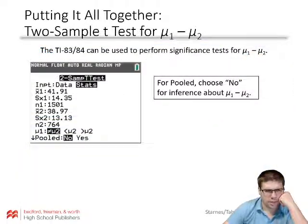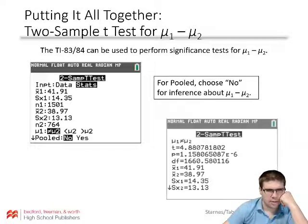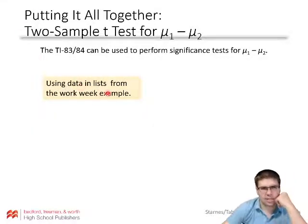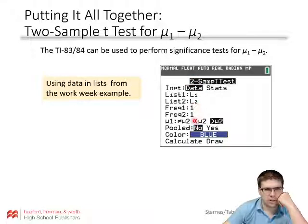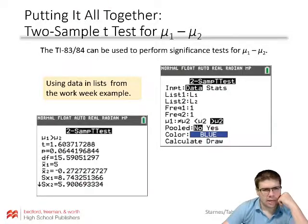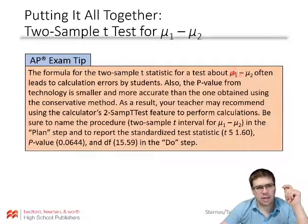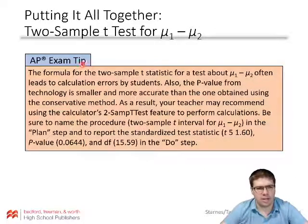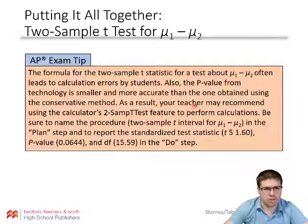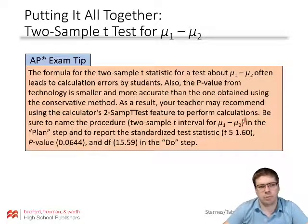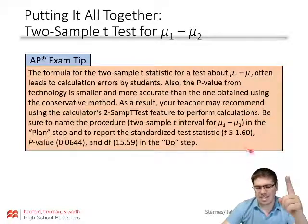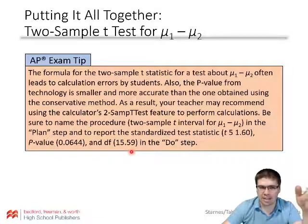For the calculator, enter the data into lists and run the two-sample t-test with data from L1 and L2 — select pooled: No — and you'll get those values. AP exam tip: the formula for the two-sample t-test statistic often leads to calculation errors. The p-value from technology is smaller and more accurate than the one from the conservative method. So use the two-sample t-test feature on your calculator. Be sure to name the procedure, report the t-test statistic, the p-value, and the degrees of freedom used — you need all three numbers from your calculator.